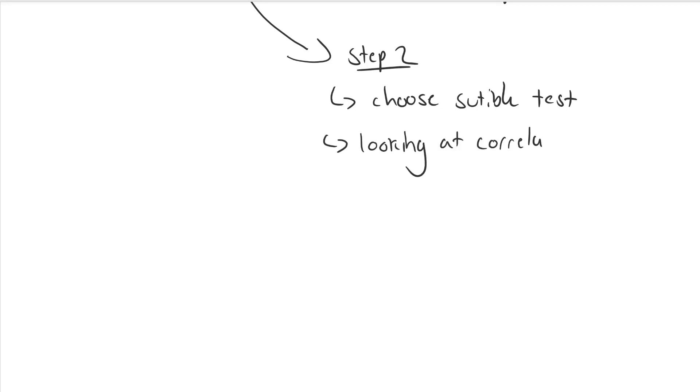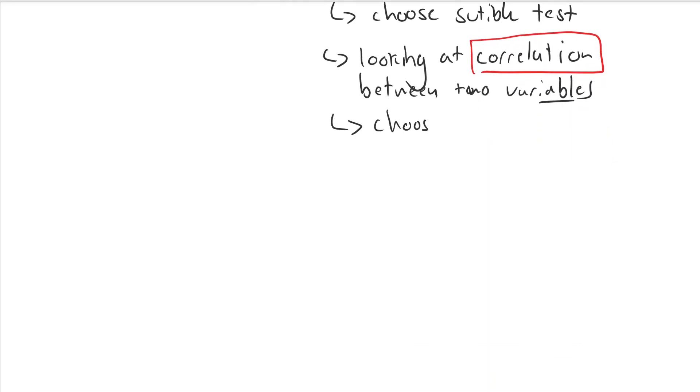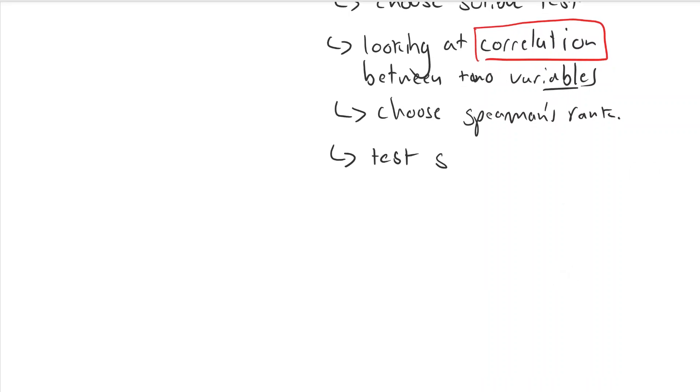Unlike the other tests chi-squared and t-tests they're not correlation. This test shows the strength and direction depending on whether it's positive or negative of a relationship between two variables. So you're comparing them to see if one is likely to be affecting the other.